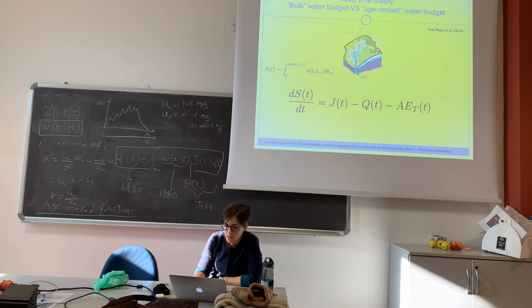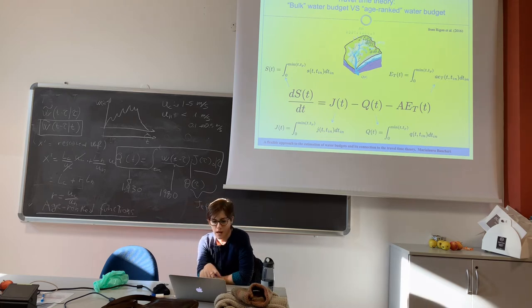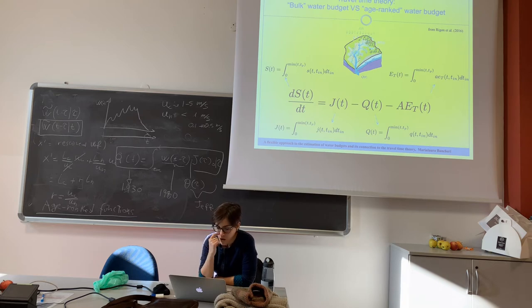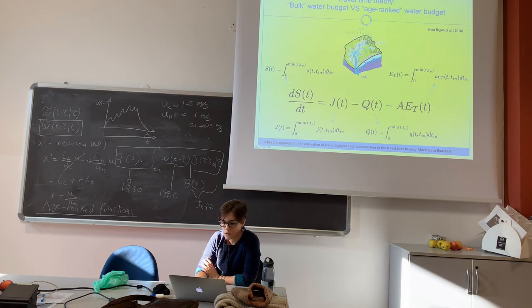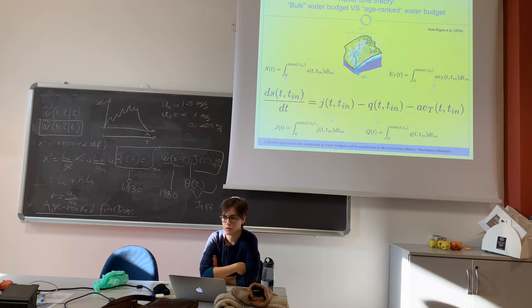Each of these terms can be written as the integral between zero and the time you are considering, as the integral of these quantities which are S, which we call the age-ranked quantities, because they are defined with the time T we are considering and the injection time. So T is the injection time. We obtain the age-ranked quantities for each of these terms, and we pass from the bulk water budget to the age-ranked water budget.